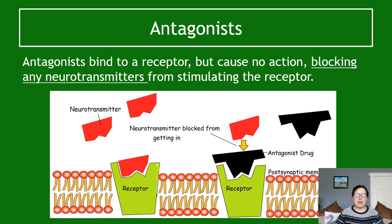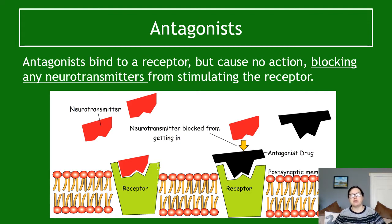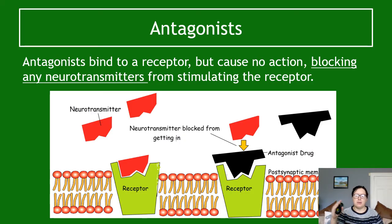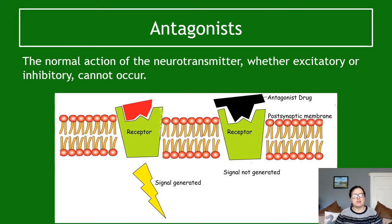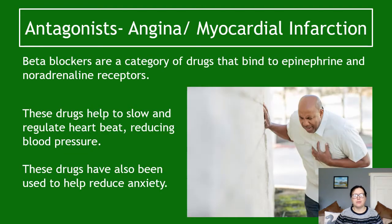Antagonists are category two. They bind to a receptor but cause no action — they block any neurotransmitters from stimulating the receptor. In the diagram, the black antagonist molecule sits in the receptor's active site, preventing the neurotransmitter from getting in. As a result, if the neurotransmitter and receptor would normally generate a signal, the antagonist blocks that signal.